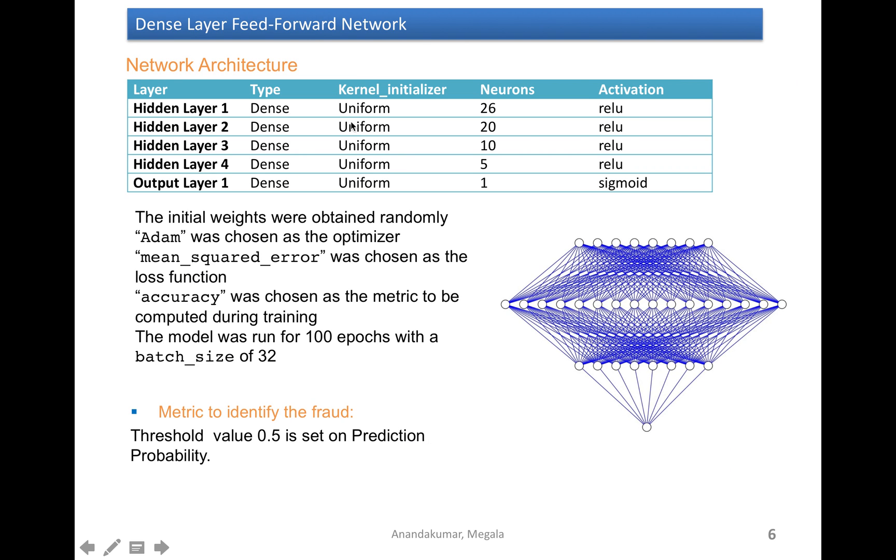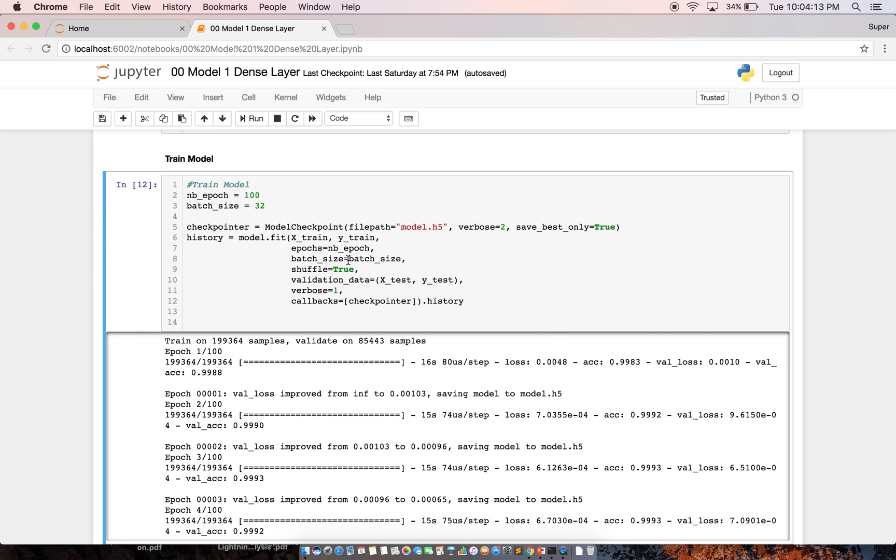This is the dense layer feedforward network that I built. I have used four hidden layers and one output layer. I used sigmoidal function at the output layer and ReLU function in my hidden layers. I tried my model for 100 epochs. I kept the batch size 32.